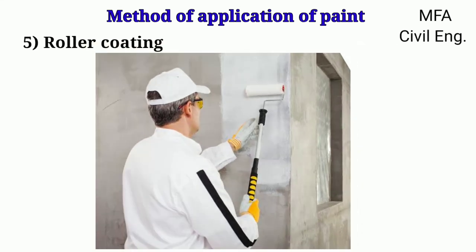Roller coating method is used when articles are in the form of flat sheets. These are passed through a rubber-coated roller on which a small quantity of paint is applied, and the articles are painted uniformly during their passage through the roller.